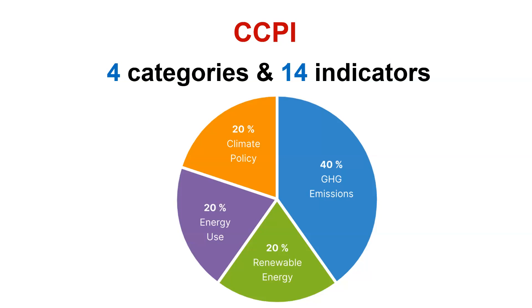Now, another key point about CCPI: whenever we assess any index, there are indicators and parameters used to assign marks or ranks to countries. In CCPI, there are four different categories, and within these, 14 indicators are used to assign ranks to different countries. Examiners can ask: 'In CCPI, how many categories of parameters are used?' The four categories are: greenhouse gas emissions, which receives 40% weightage; and then renewable energy, energy use, and climate policy each receive 20% weightage. Together they total 100%.